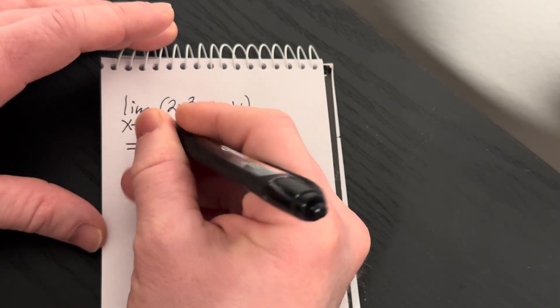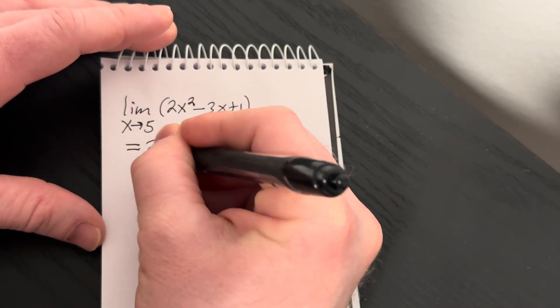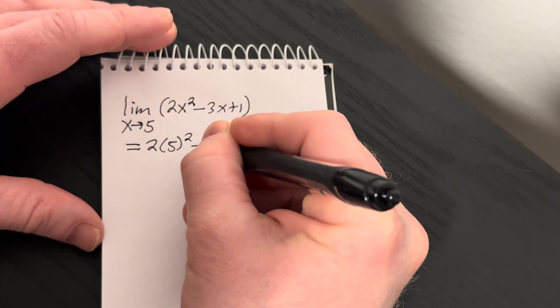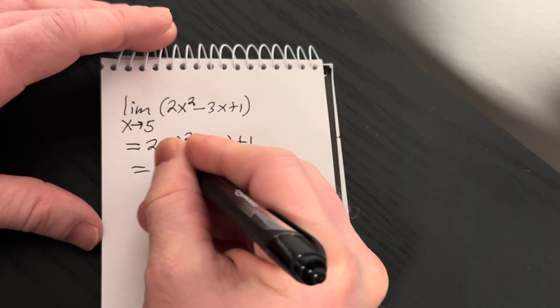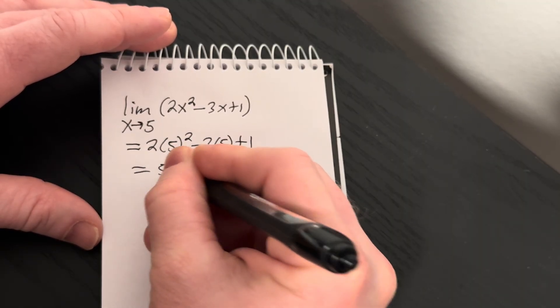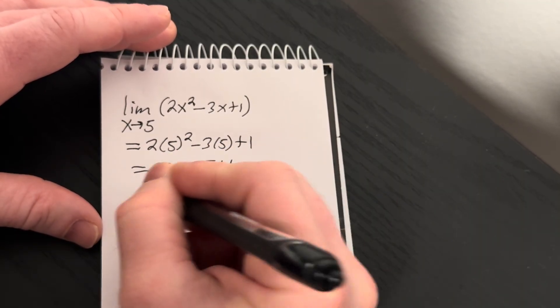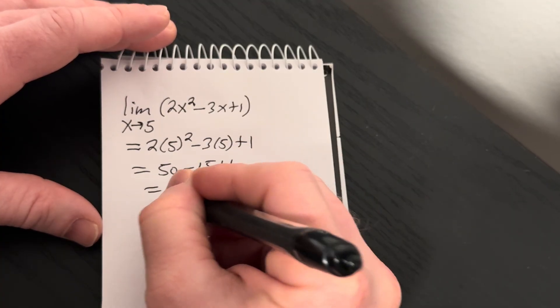So when you do that, you stop writing the limit sign. So you have 2 times 5 squared minus 3 times 5 plus 1. So that's 2 times 25. So that's 50 minus 15 plus 1. So it's going to be 36.